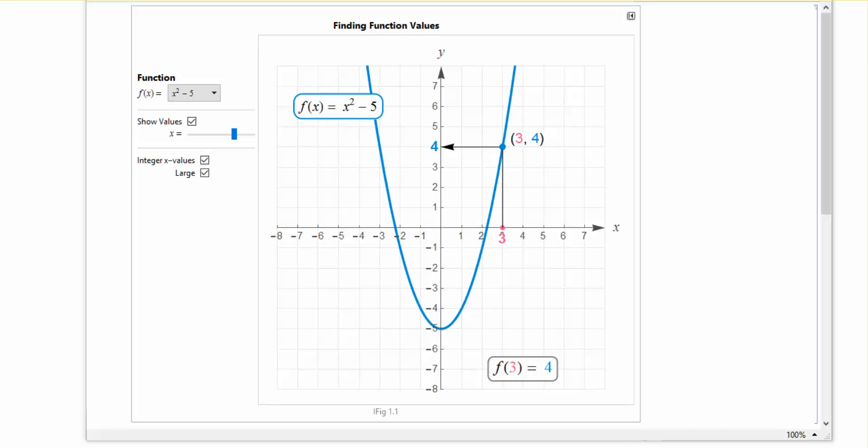Let's look now at finding function values based on a graph. So I have here a function pulled up. This is the function x squared minus 5.